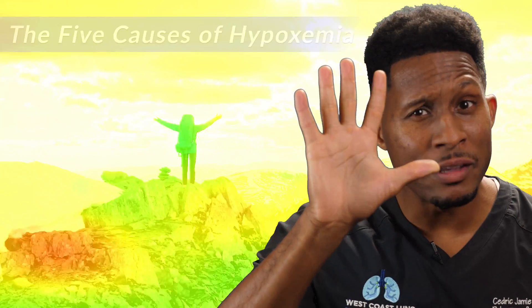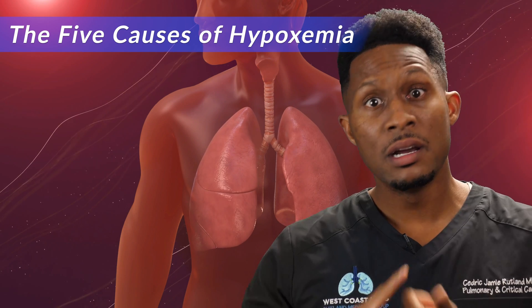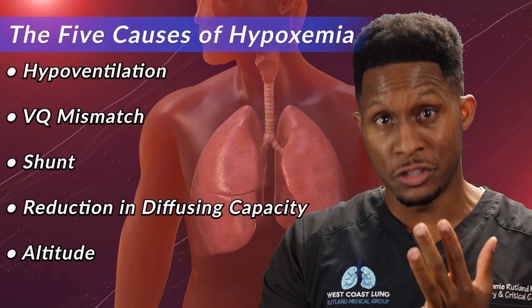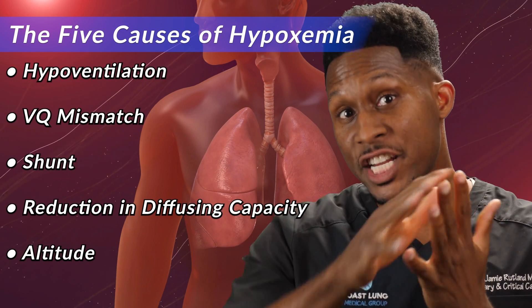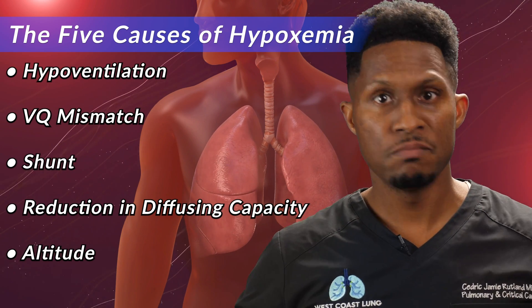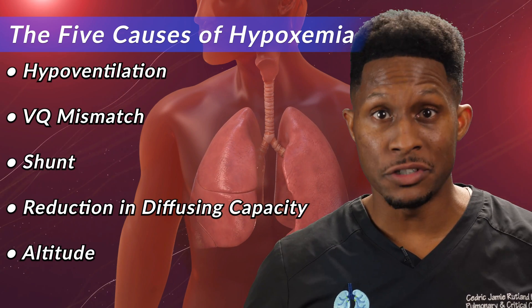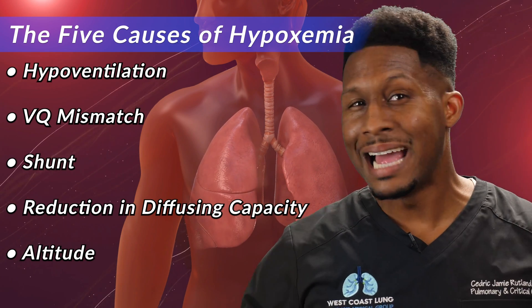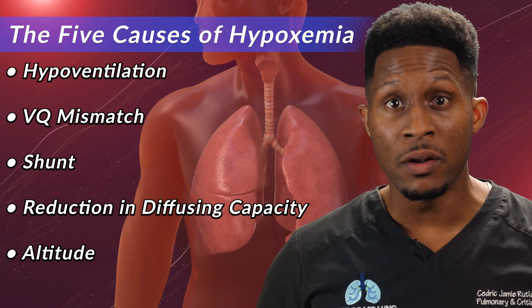So again, there are only five causes of hypoxemia in a human being: hypoventilation, VQ mismatch, shunt, reduction in diffusing capacity, and altitude. You are short of breath for a combination of those five reasons, or at least one of them. 99 times out of 100, it's really not going to be altitude unless you're on Sokovia in Avengers: Age of Ultron. So you really only have four things to rule out. Get that chest X-ray, get that CAT scan, consult your local pulmonologist — if you're in Orange County, I'm right here — and try to find out why you're short of breath. It may not always be easy, but there's always a plan.